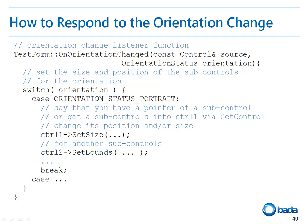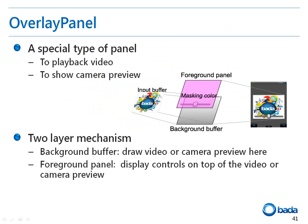Also, the orientation of the UI can be changed by changing the location and size of the subcontrol according to the orientation of the phone. Next, I'll explain the Overlay Panel, which is a subclass of the Panel. This class has been developed to provide special functionality for playing videos or showing a camera preview.